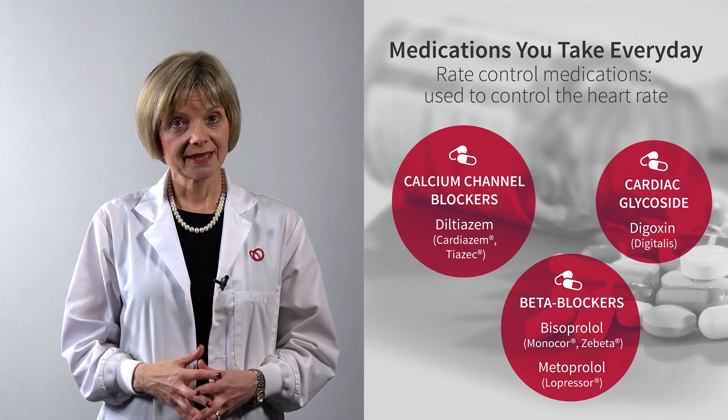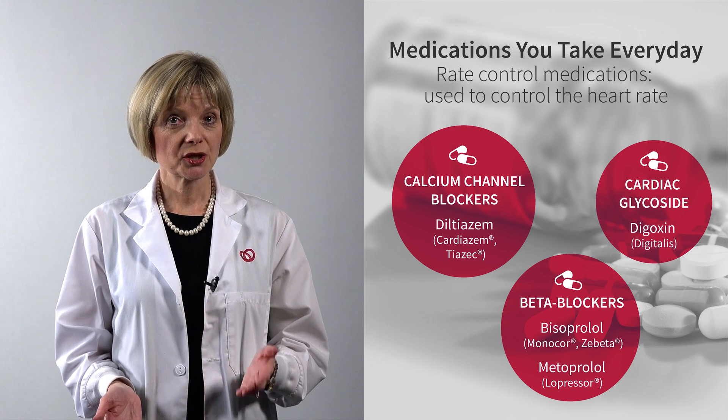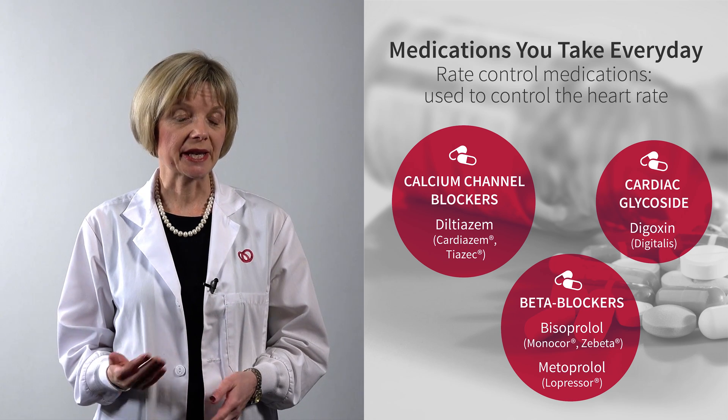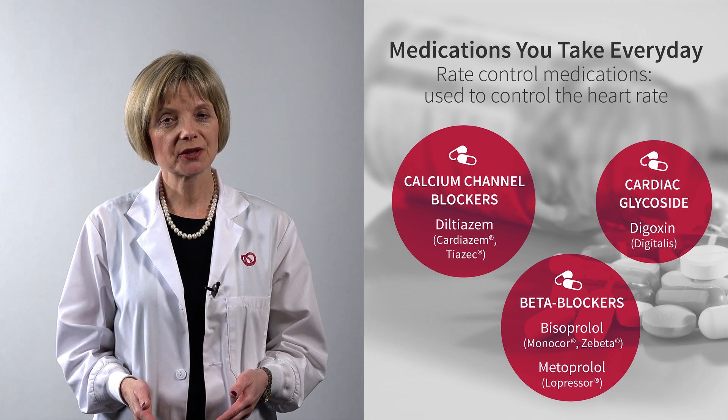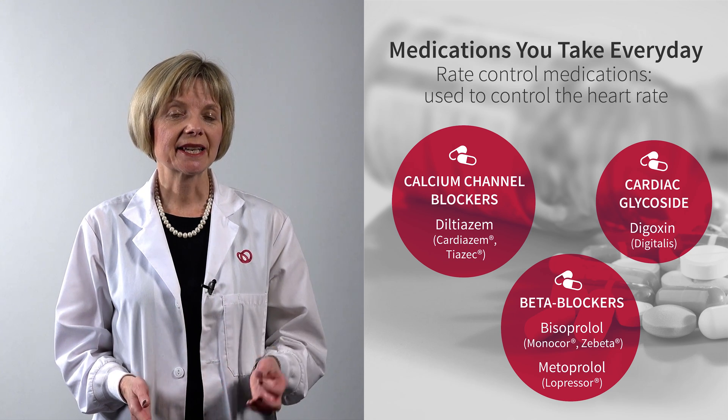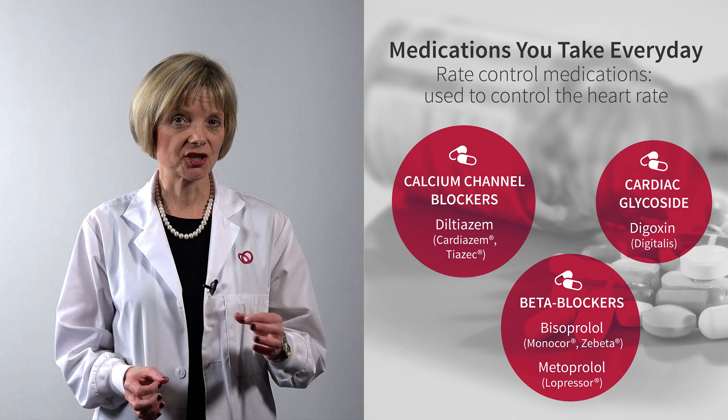Some patients do not need any medications as they don't experience any symptoms with their AF. A rate control medication is to slow your heart to a more normal rate and it helps to also slow irregular heart rhythms. Examples of rate control medications would be beta blockers such as metoprolol, calcium channel blockers such as diltiazem, and cardiac glycosides such as digoxin.